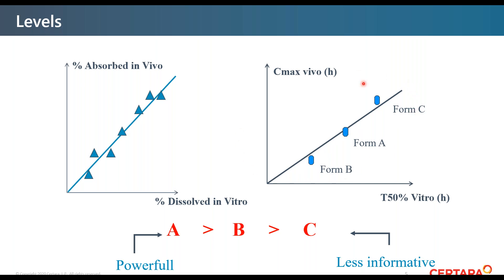Level C is seen as less informative, but that depends — if you have a link between all the pharmacokinetic parameters relevant for bioequivalence and in vitro, you are allowed to predict Cmax and AUC as well as other parameters. With Level A you are going to predict the full plasma concentration curve, but among this full curve what is often important is only the AUC and the Cmax.